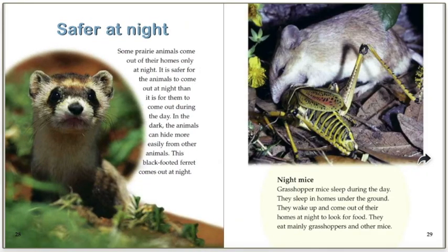Safer at night. Some prairie animals come out of their homes only at night — it's safer for them to come out at night than during the day. In the dark, animals can hide more easily from other animals. This black-footed ferret comes out at night. Grasshopper mice sleep during the day in homes under the ground. They wake up and come out at night to look for food, eating mainly grasshoppers and other mice.